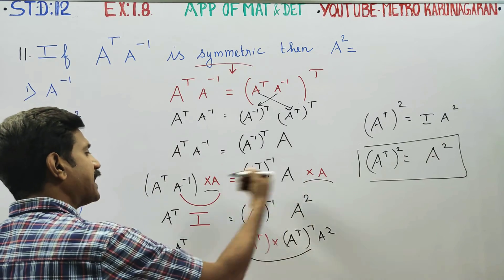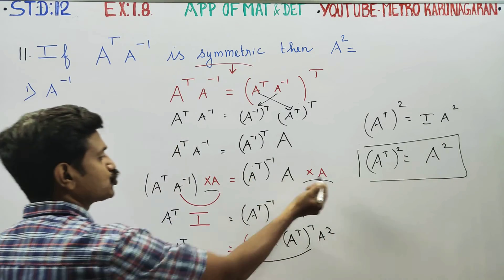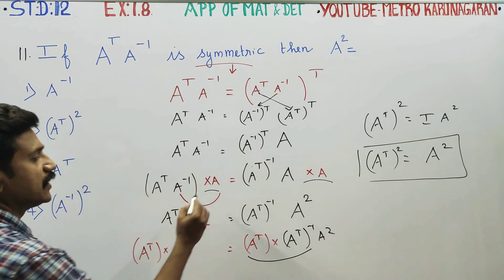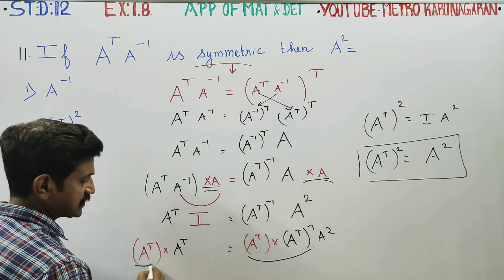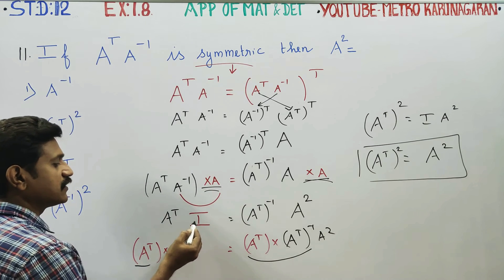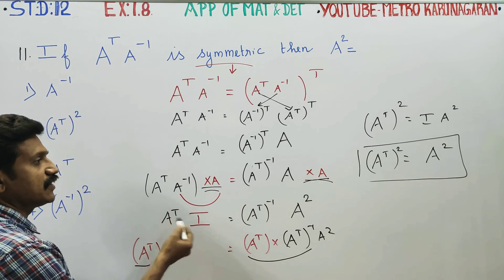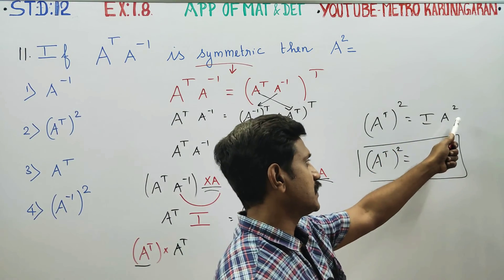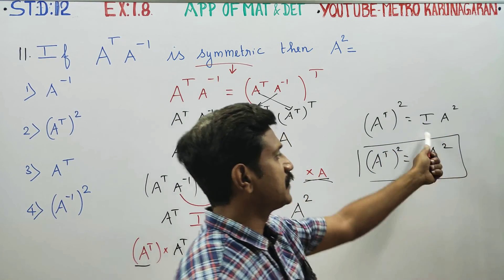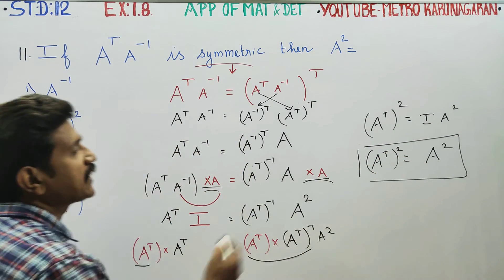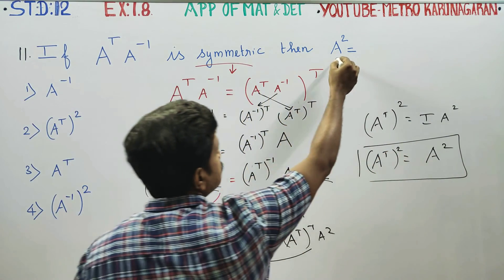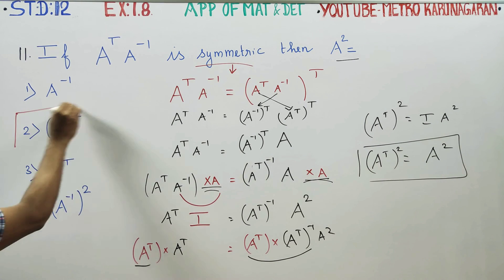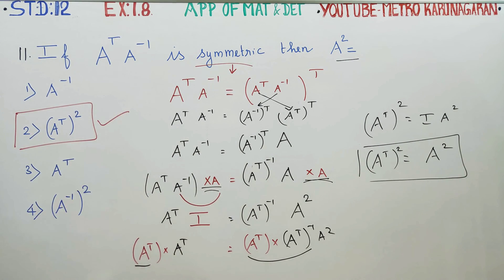This sum uses back-side post-multiply and front-side pre-multiply to do extra work. If identity is a unit matrix, unit matrix into anything gives the same number — so unit matrix into A square gives A square. If we check the answer, A square is equal to A transpose squared. Your exact option will be the second option.